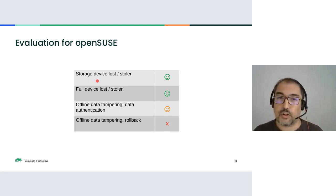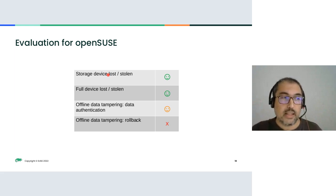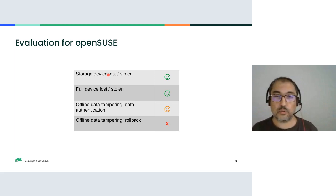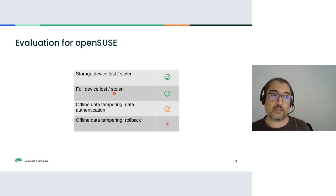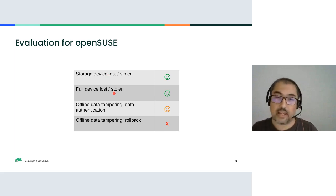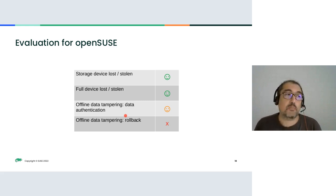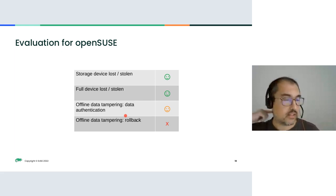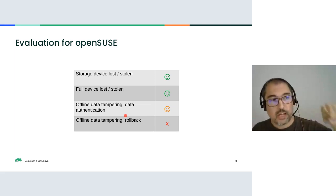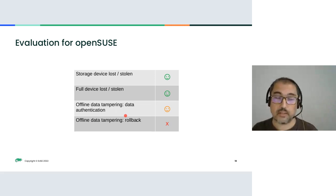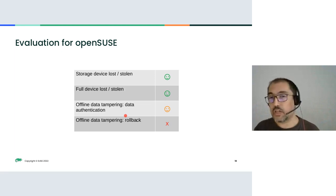You only decrypt the secret if the kernel, initrd, GRUB, and firmware are in a good known state. Evaluating this approach: for lost or stolen storage, there's no way to decrypt or access the data. GRUB is asking for the password before accessing the kernel, so there's no entry point. The same applies if the full device is stolen. Regarding offline tampering: when using Btrfs on a LUKS device, the metadata on the device is also encrypted, so if a file's CRC or metadata doesn't match, it produces an I/O error — providing some data authentication.